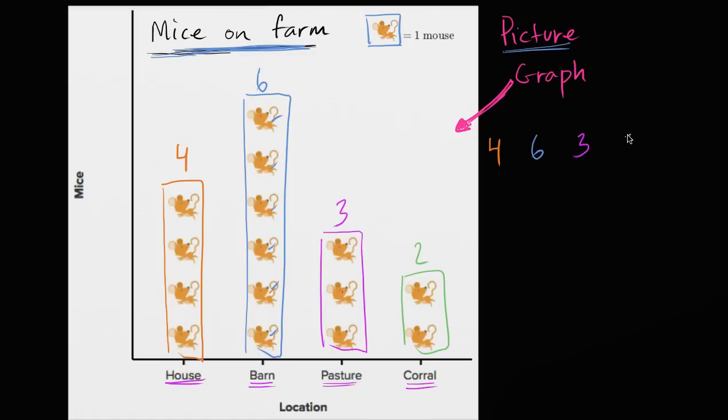So if someone asked you, how many total mice are there on this farm? Well, you would add all of these up. You would say four plus six is ten, plus three is thirteen, plus two is fifteen.